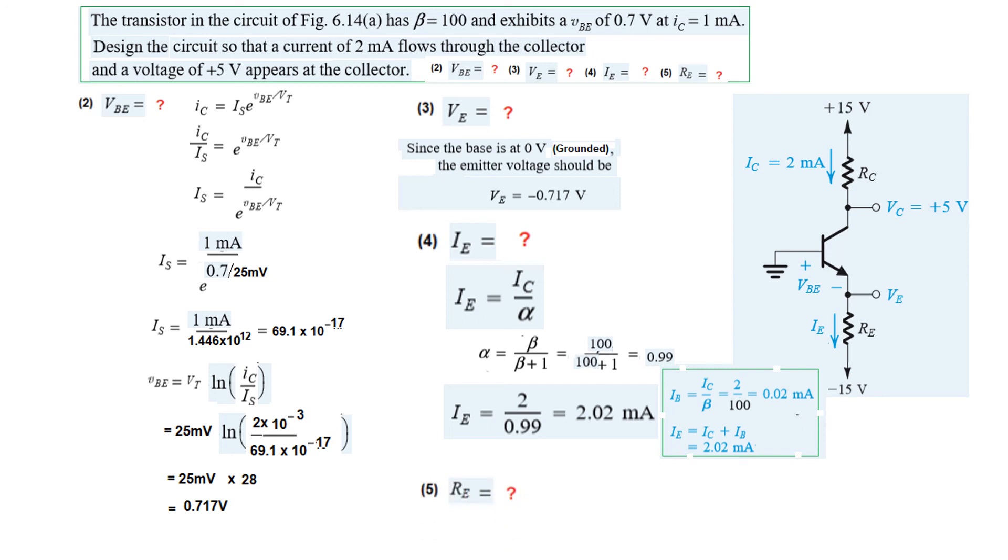Finally, RE, this resistance we have to find. We know the current IE 2.02, we know these two voltages. For RE we can write VE minus this voltage minus 15, divided by IE. RE comes to be 7.07 kilo ohms. This is how we can solve this type of problem. I hope this gives you an idea. Thank you.